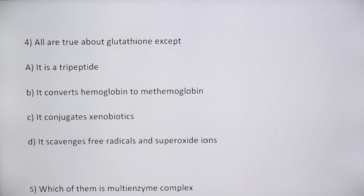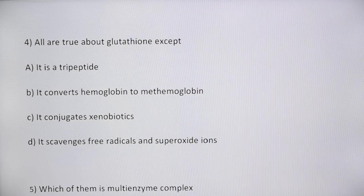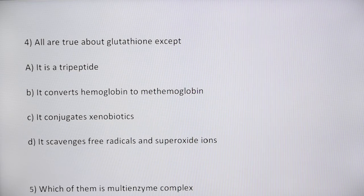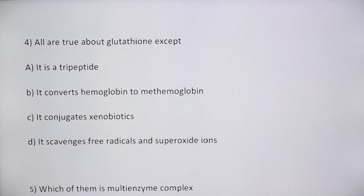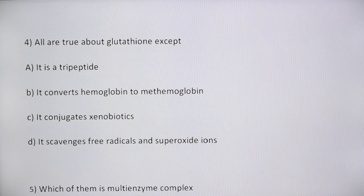Glutathione protects the integrity of the red blood cell membrane and also protects hemoglobin from oxidation by agents such as hydrogen peroxide. Going through the options: it's a tripeptide — true; it converts hemoglobin to methemoglobin — false, it actually prevents methemoglobin formation; it conjugates xenobiotics — true; it scavenges free radicals and superoxide — true. So option B is the answer.